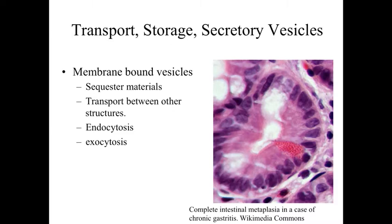A lot of what we're focusing on are vesicles — membrane-bound structures found within the cell. Depending upon what they're doing and where they are, they may be referred to as transport vesicles, storage vesicles, or secretory vesicles. Transport vesicles are essentially moving materials from one location to another. Storage vesicles are storing or sequestering material. Secretory vesicles are involved with actually releasing material from the cell. We also have endocytotic and exocytotic membrane-bound vesicles involved with either endocytosis or exocytosis.